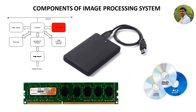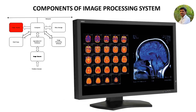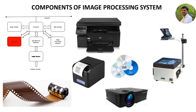The last category is archival storage, which is used for massive images with infrequent access. The next component required in the image processing system is image displays. Normally, TV monitors, LCD, and LED screens are used to display the images.